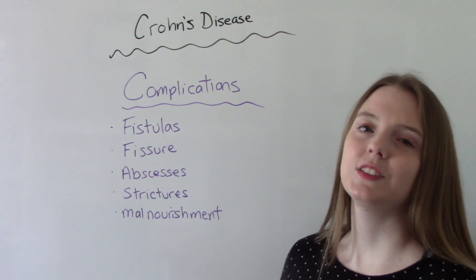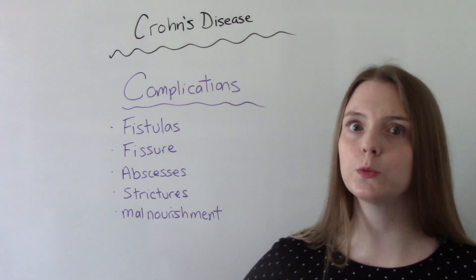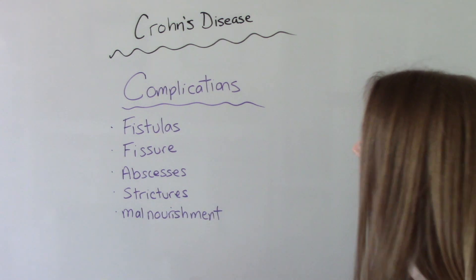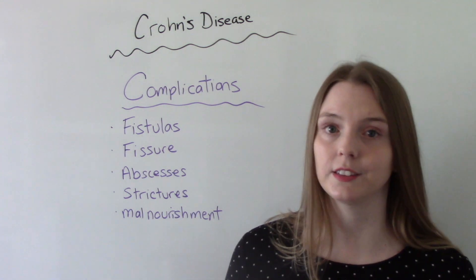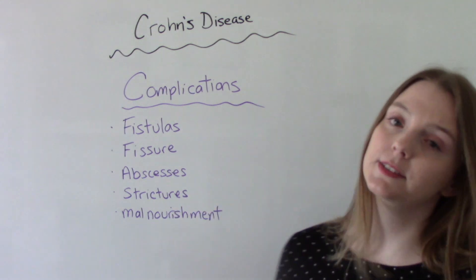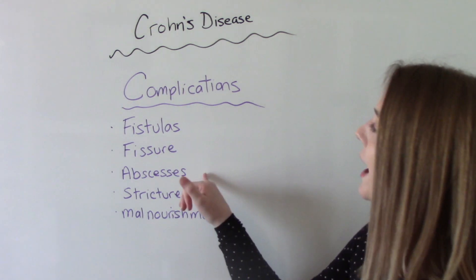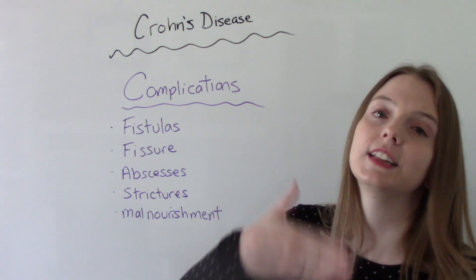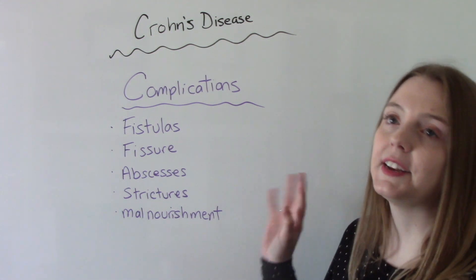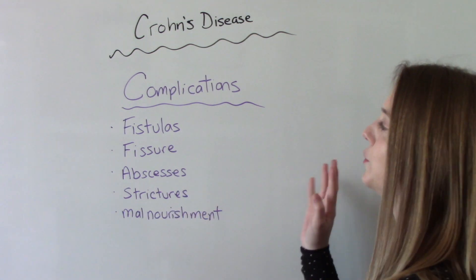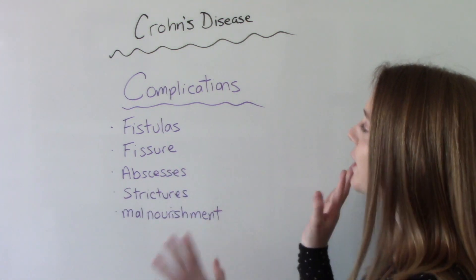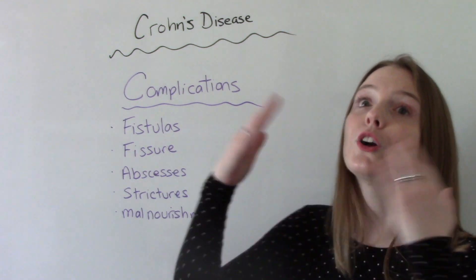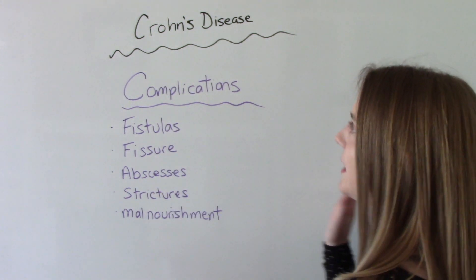Some potential complications that can occur include fistulas, strictures — the narrowing of the intestine — and malnutrition from malabsorption of nutrients. An abscess can also form and typically that can turn into a fistula. Fissures, which are little tears in the lining of the bowel, can also occur. These things can be very dangerous — they can lead to infection, malabsorption of nutrients, and throw off your fluid and electrolyte balance. Good treatment, good nursing interventions, and excellent GI assessment are key to helping these patients.